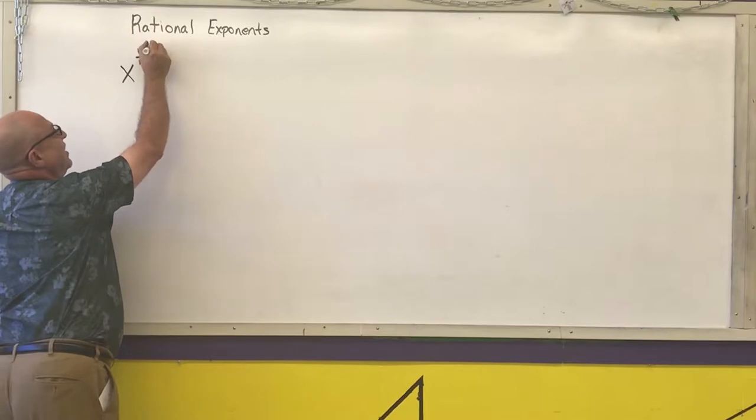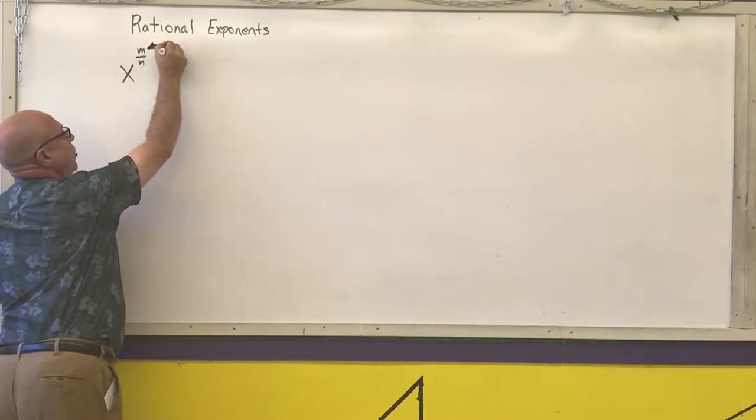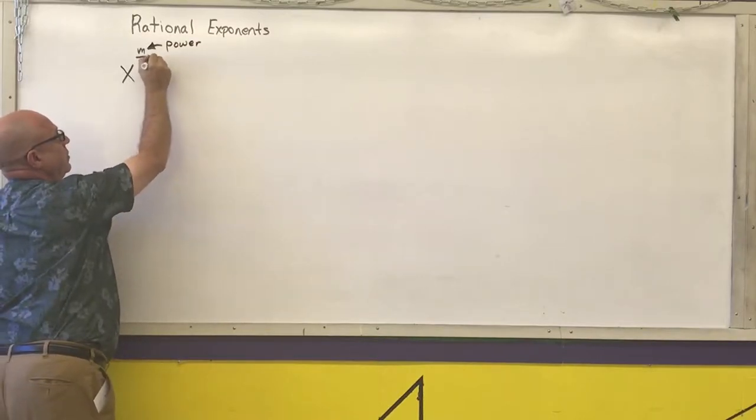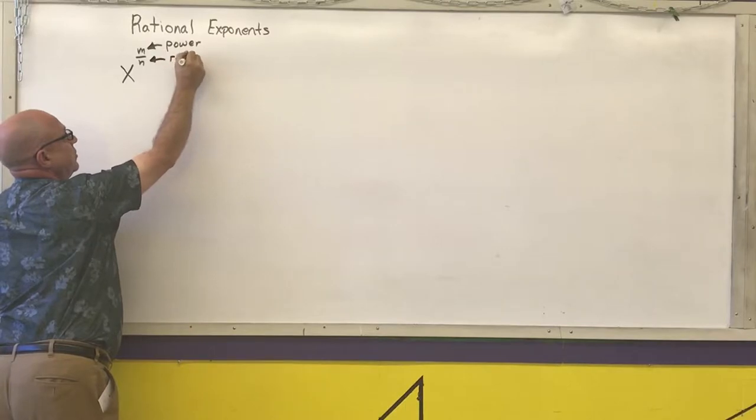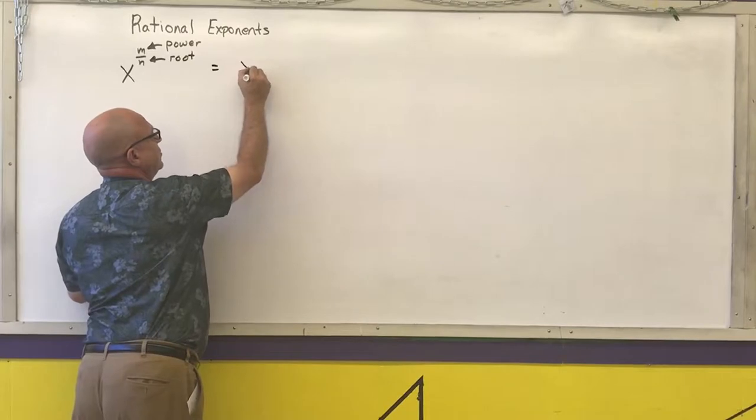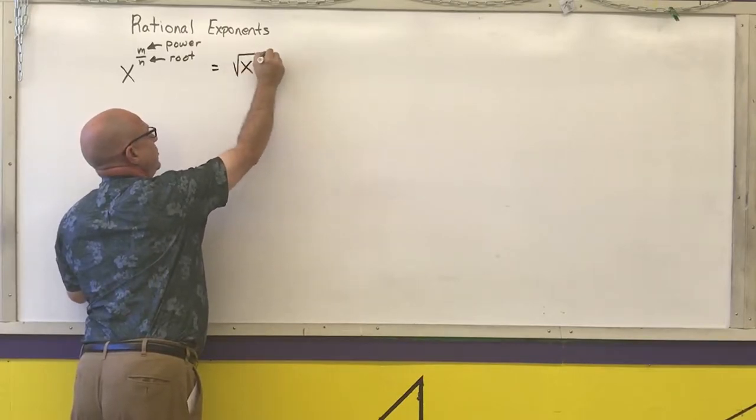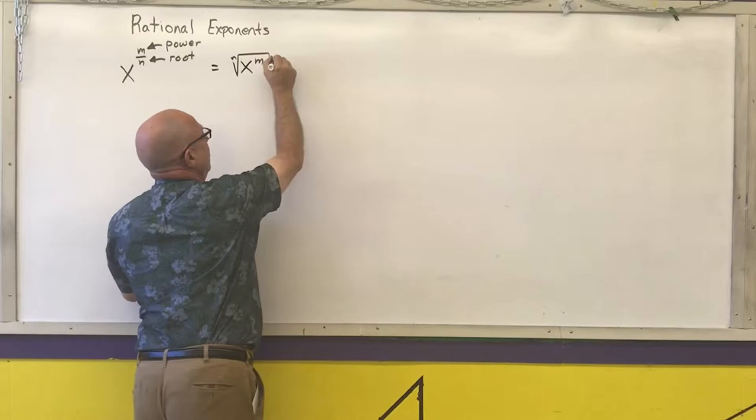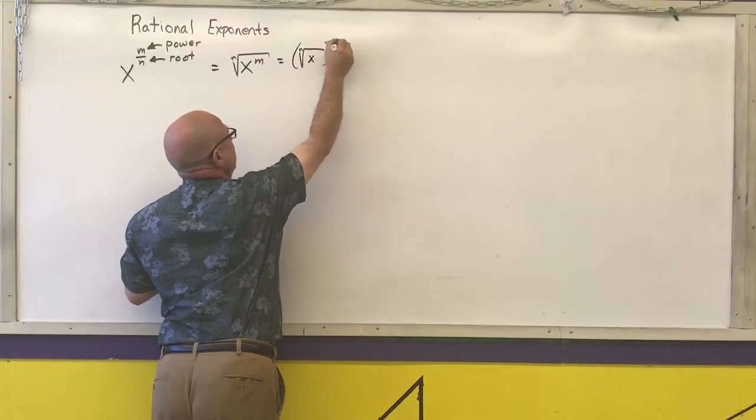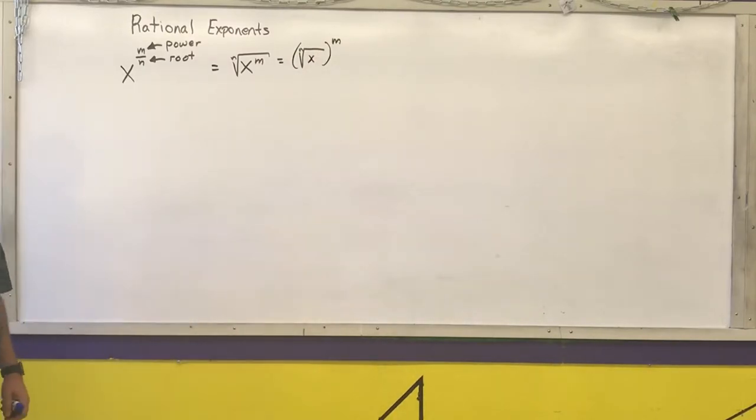The numerator is the power that I'm going to raise this thing to, and the denominator is the root. X to the m over n is equal to the nth root of x to the m, or I can take the nth root of x and then raise that whole thing to the mth power. This allows us to do some simplification of things or other methods to think about for simplifying radicals.